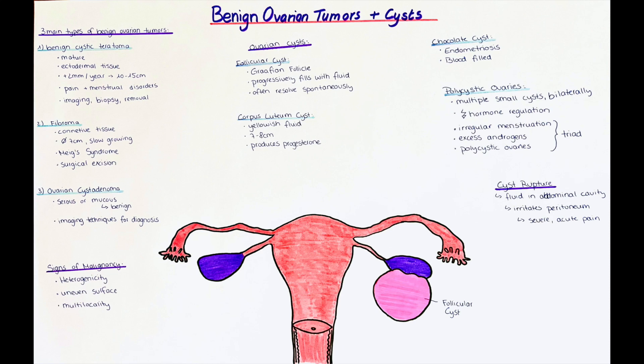The symptoms are usually caused by the growing size of the teratoma. They typically grow around 2 mm per year but can reach a total diameter of 10 to 15 cm. Symptoms include pelvic or abdominal pain due to pressure on the ovaries and surrounding ligaments and nerves. To diagnose a teratoma, imaging techniques are necessary, including x-rays, CT scans, MRIs, or ultrasound. Once found, a biopsy is usually done to confirm its benign or malignant characteristics.